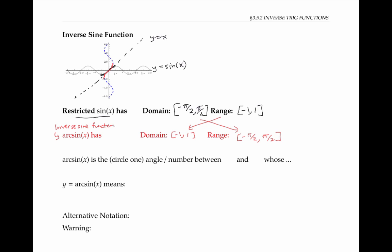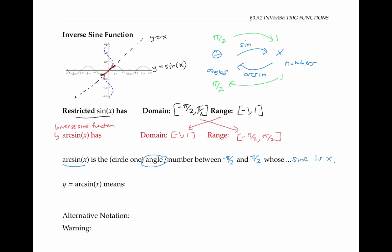An inverse function undoes the work of a function. So if the function sine takes angles theta to numbers x, then the inverse sine or arc sine takes numbers x to angles theta. For example, since sine of pi over two is one, arc sine of one is pi over two. In general, the output of arc sine of x is the angle between negative pi over two and pi over two whose sine is x. Y equals arc sine x means that x equals sine of y. But since there are many angles y whose sine is x — they all differ by multiples of two pi — we specify also that y is between negative pi over two and pi over two.